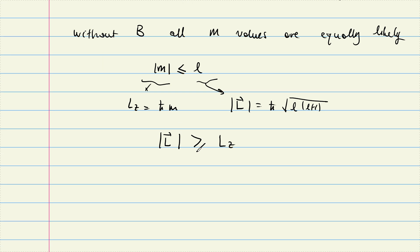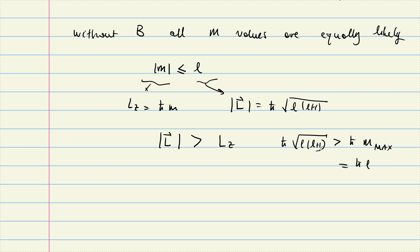The magnitude of L is always strictly bigger than L_z because of that +1 term: ℏ√(L(L+1)) > ℏL. If that +1 weren't there, it would be L² under the root, and we'd have ℏL = ℏL — equality. But the +1 makes it always an inequality: the magnitude of L is always bigger than its z-projection.